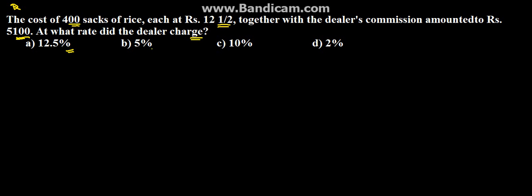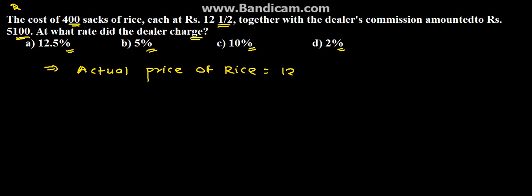The options given are 12.5%, 5%, 10%, and 2%. In the solution, first let us calculate the actual price of rice. The actual price of rice is equal to 12.5 into 400, because ₹12.5 is the price of 1 sack. So 400 sacks will together cost ₹5,000.